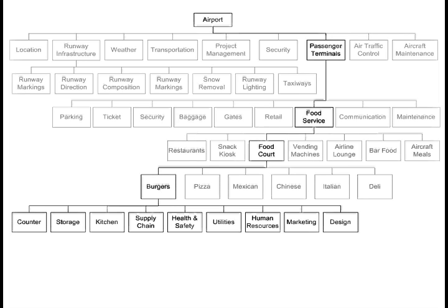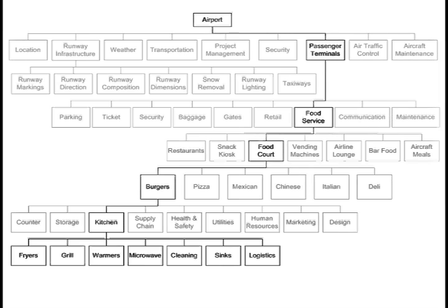Further subdividing the kitchen, we'd have fryers, the grill, warmers, microwave ovens, cleaning supplies, sinks, and the logistics of the mechanics of how things are arranged in the restaurant.